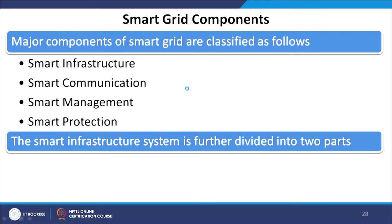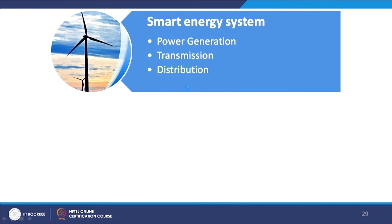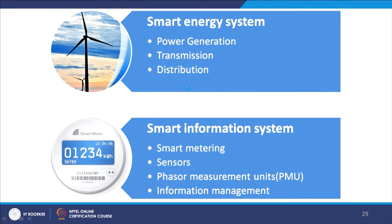The smart infrastructure system is further divided into two parts: smart energy system, which covers power generation, transmission, and distribution types; and smart information systems, which include smart metering, sensors, phasor measurement units, and information management. With this we conclude Lecture 1 today. In the next lecture, we will continue with the Introduction to Smart Grid by understanding the detailed components and their characteristics and applications of smart grid. Thank you.